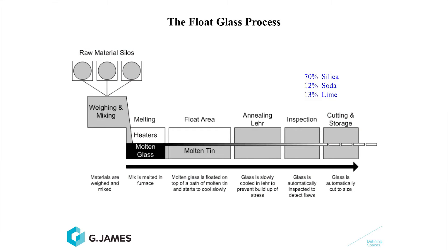How is glass made? Glass is comprised of 70% silica, 12% soda, and 13% lime. The silica comes from sand, a very abundant material. Soda comes from soda ash, and lime from limestone or dolomite.